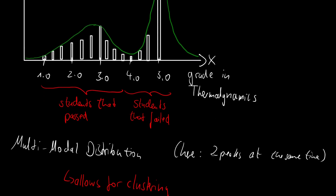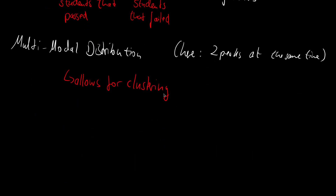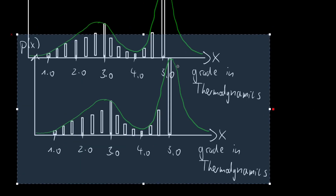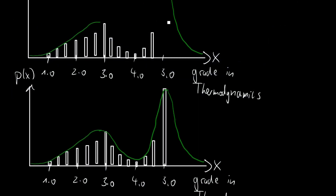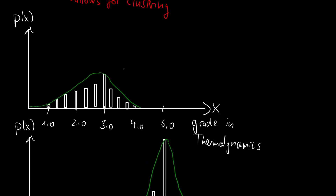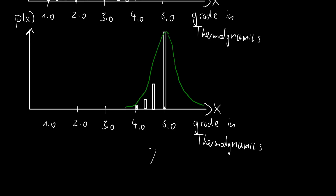But what does it mean to have two Gaussians at the same time? I will take our original plot and make two copies. For the first I will remove the second peak, and for the second I will remove the first peak, so we have two distributions. For the students that passed, we have a wide Gaussian centered at 2.8, and for the students that failed, we have a narrow Gaussian centered at 4.8.